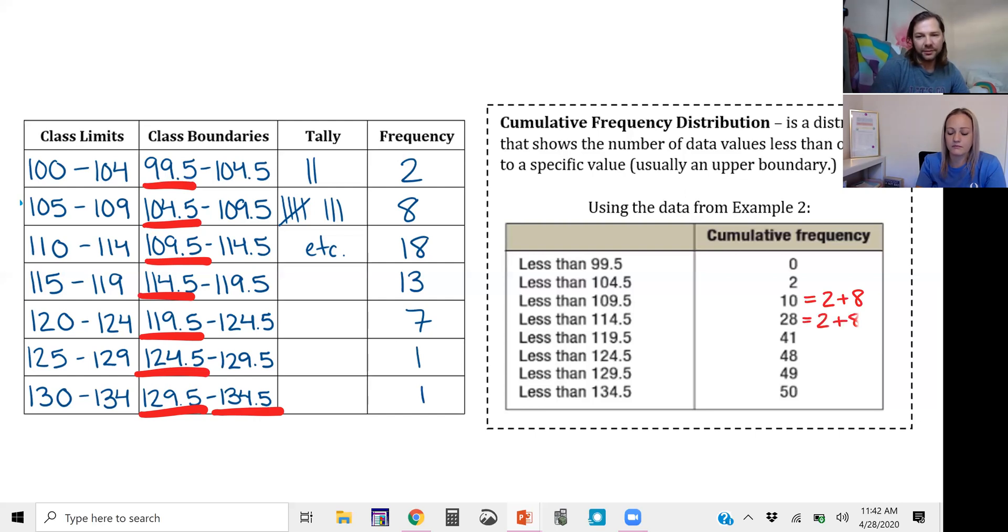And then the 28 is the 10 plus the 18 here that gives you 28 values that were less than 114.5. So 28 over 50, that would be 56 percent were less than 114.5, and this goes on.